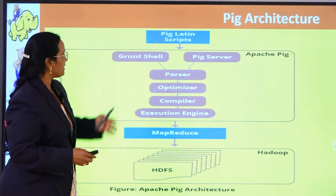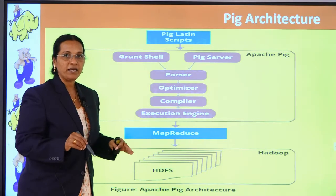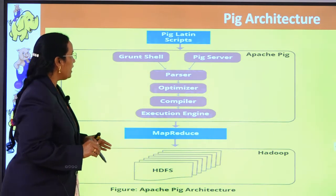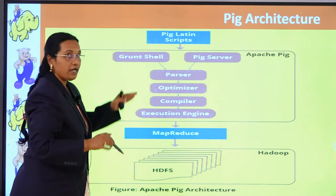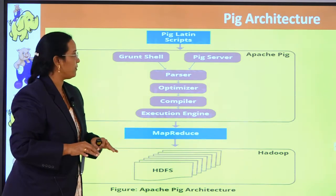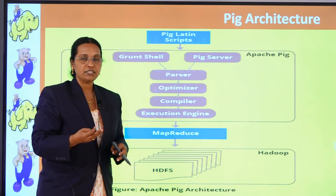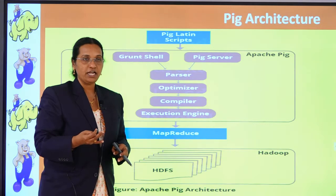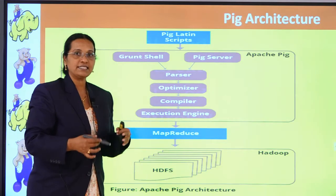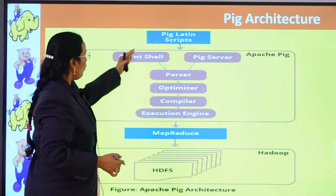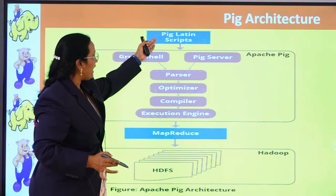The Pig architecture works like this: whenever a programmer wants to perform any task, they have to write a Pig script. They can either use a Pig script or type commands using the Grunt shell. There are three modes of working with Pig: user-defined functions, the Grunt shell, and Pig Latin scripts.